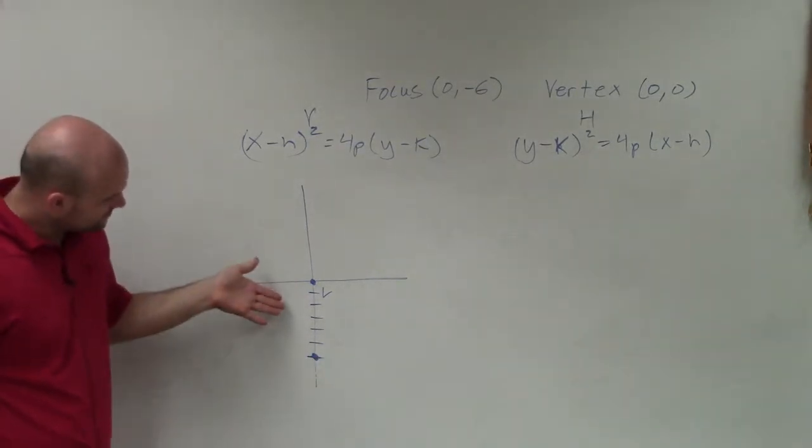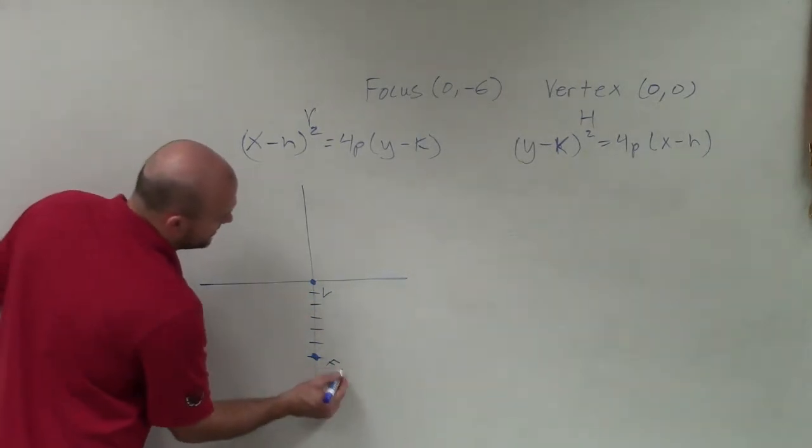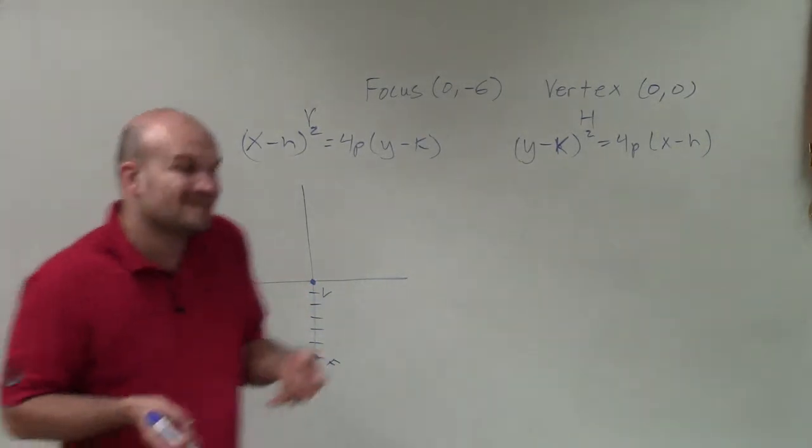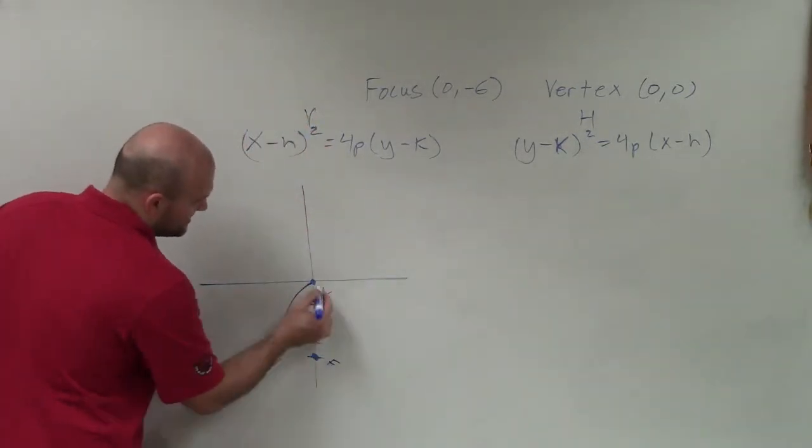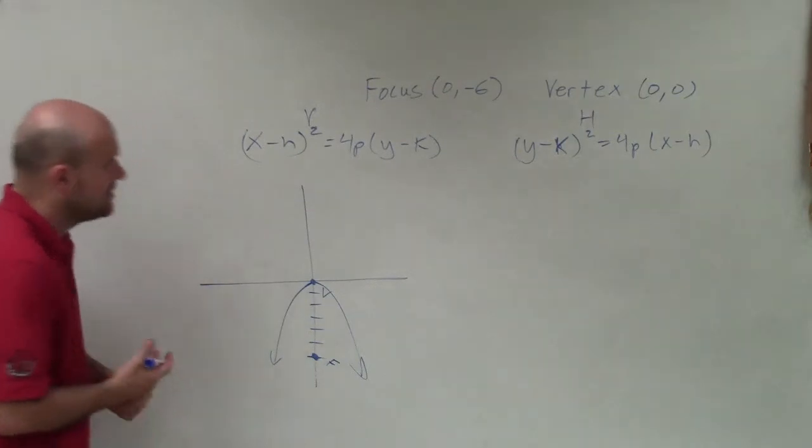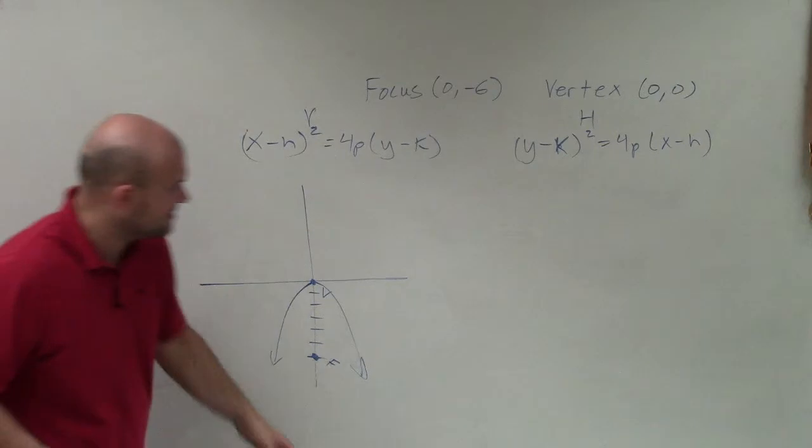Now we can see we have a vertex and our focus right here. Remember, the focus is inside the parabola, so therefore my parabola is going to be facing down. Since the parabola is facing down, we have a vertical axis of symmetry.